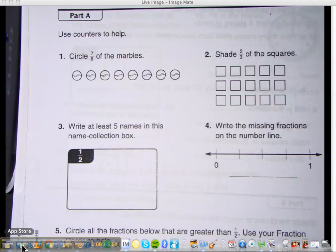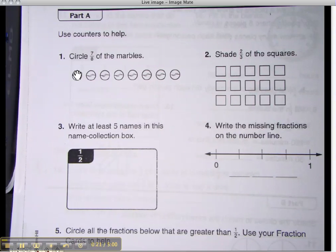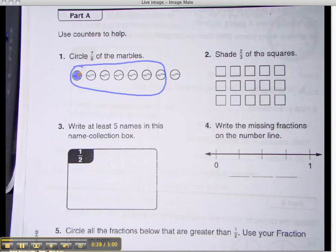Who would like to come up and do number 1? Grace? Come on up. It says circle 7/8 of the marbles. 7/8. You can switch to the pen mode. Remember you've got to hit that button, remember the color you want. There you go. It says circle 7/8 of the marbles. What do you guys think? Is she right? Yeah. Awesome, that's exactly 7/8. Nice job, Grace.